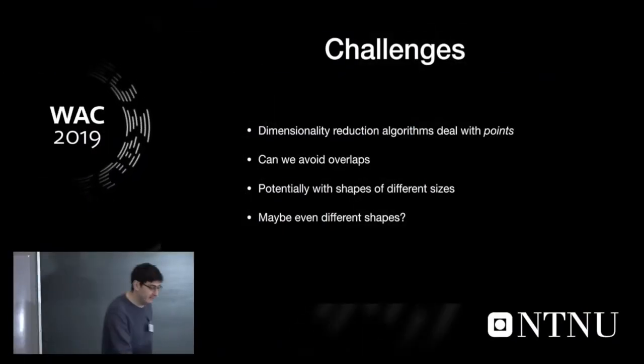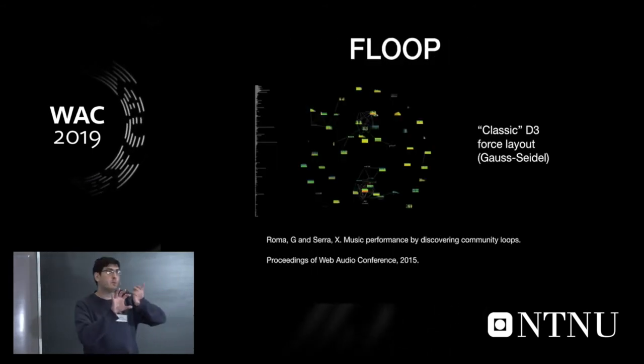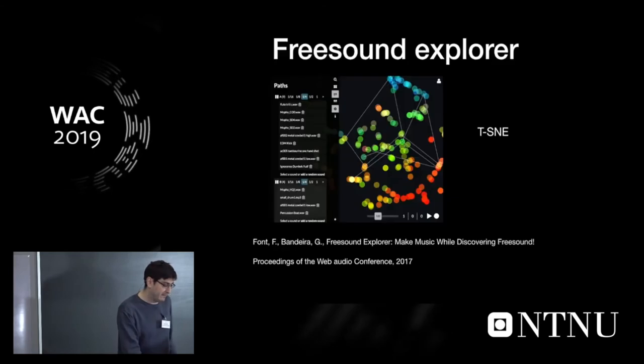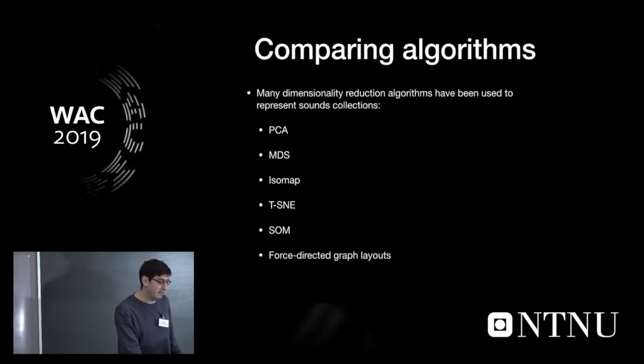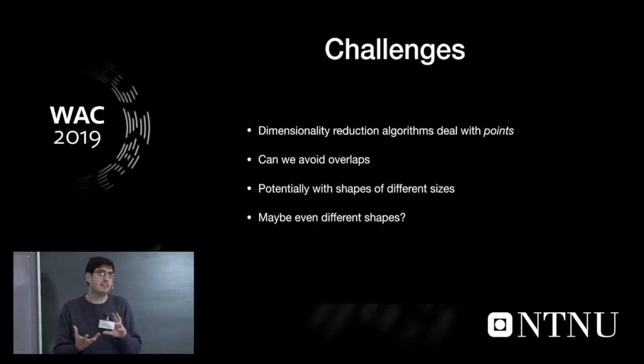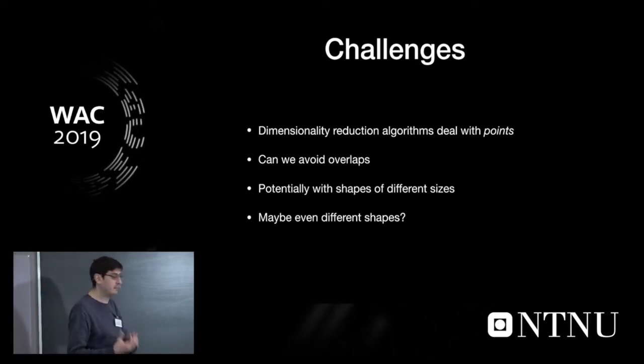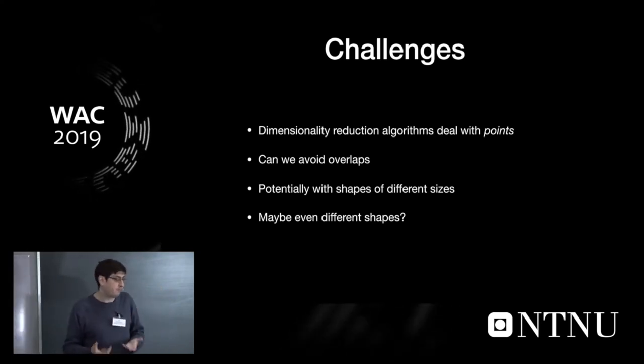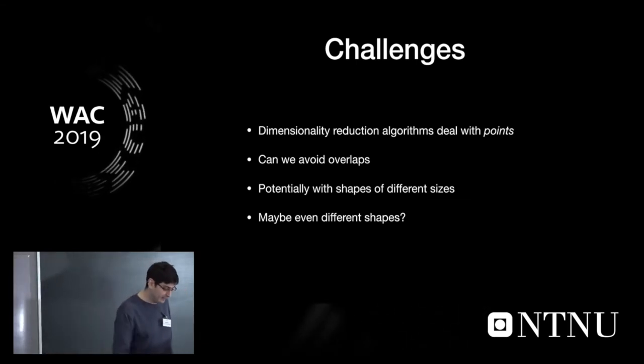And the main challenges here are, you can see in the previous projects, for example, this one was using a force layout with some repulsion force, but still there's no guarantee that there's no overlap. How can we avoid these overlaps? Then, even if we want to use different sizes for the sounds, for example, to represent duration or loudness with different sizes, and even different shapes, if we want to represent duration as horizontal size, then we'll have rectangles of different shapes. And the algorithms don't like this very much.